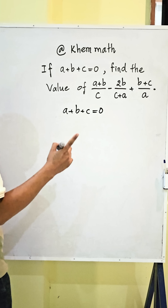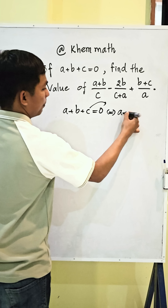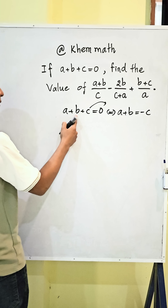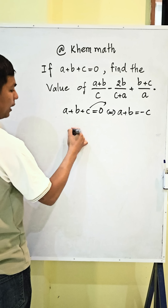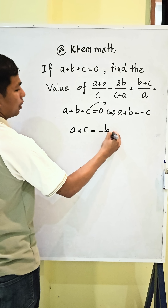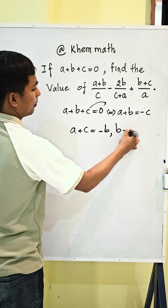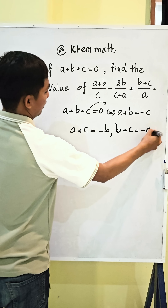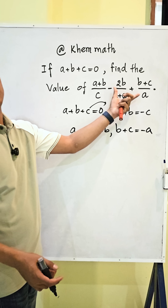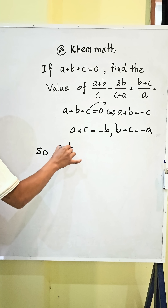If we take c to the right hand side, we get a plus b equals negative c. If we take b to the right hand side, we get a plus c equals negative b. If we take a to the right hand side, we get b plus c equals negative a.